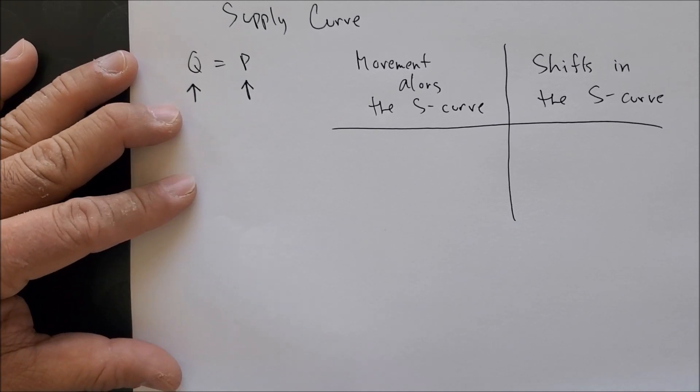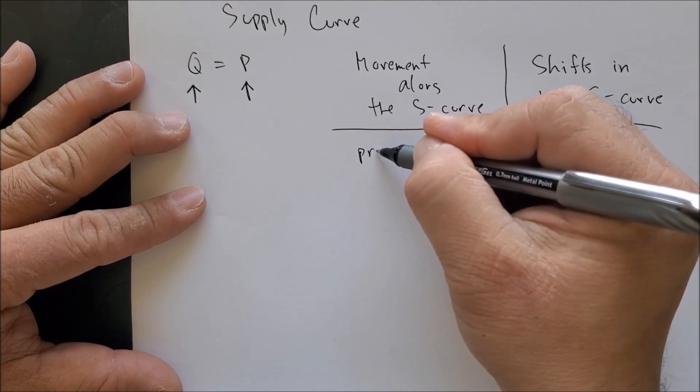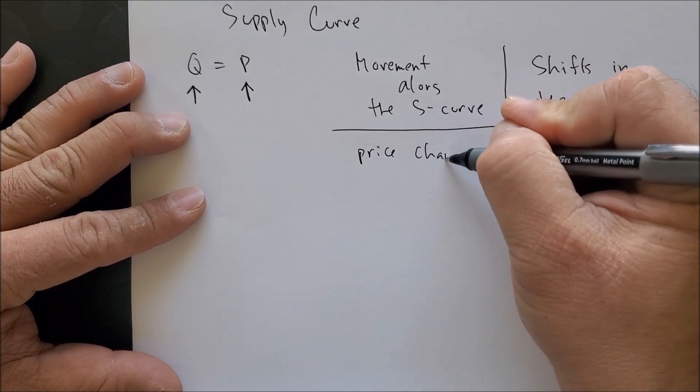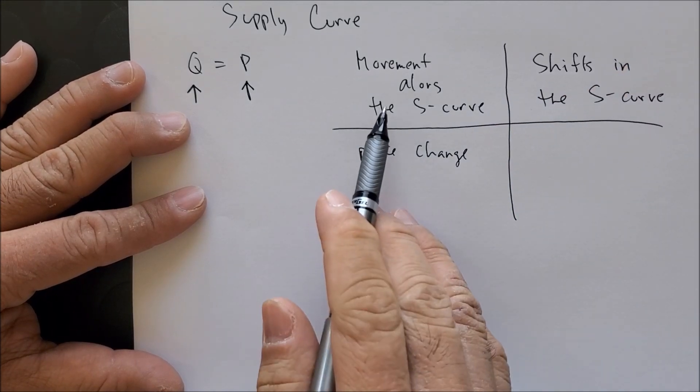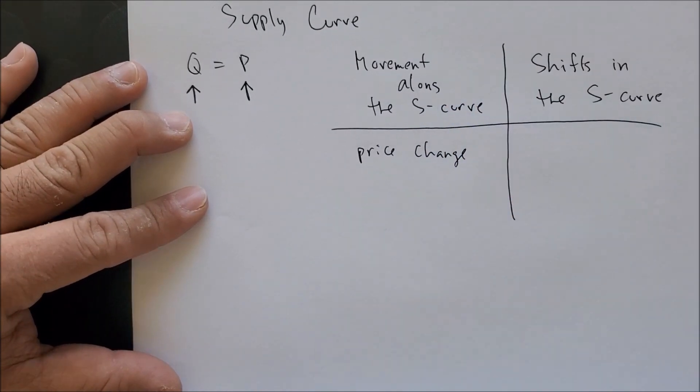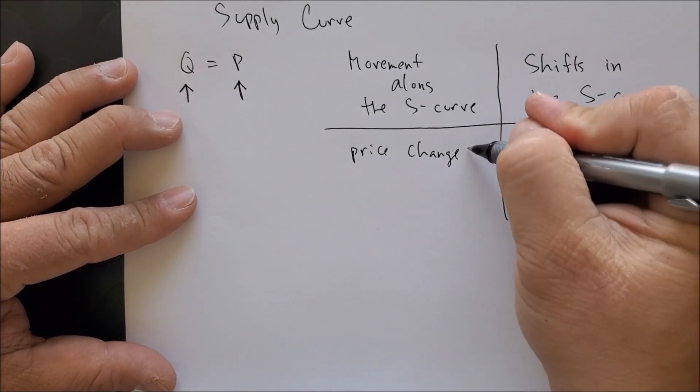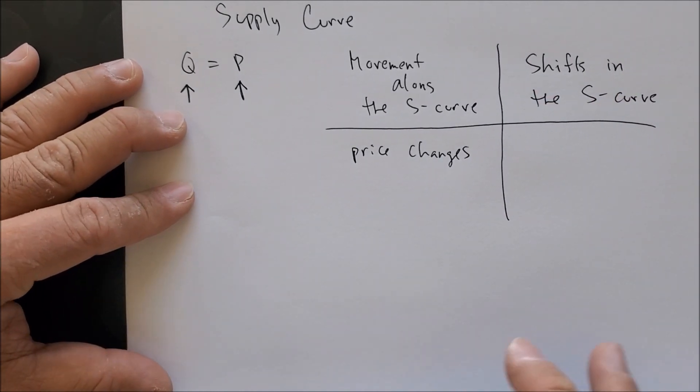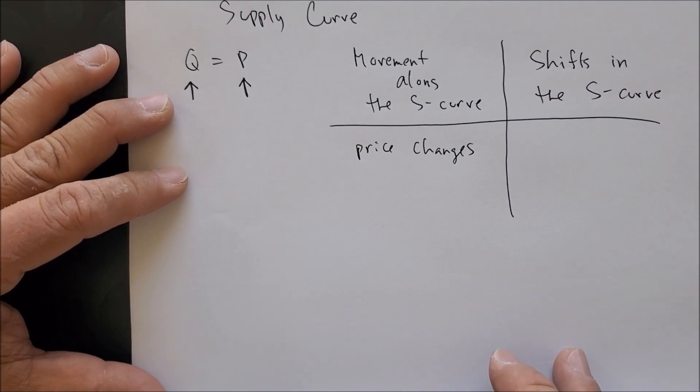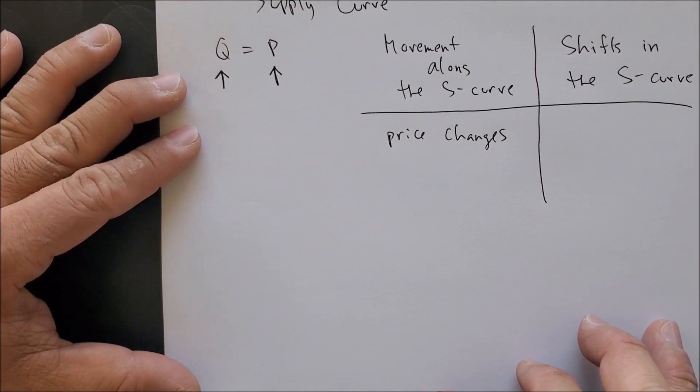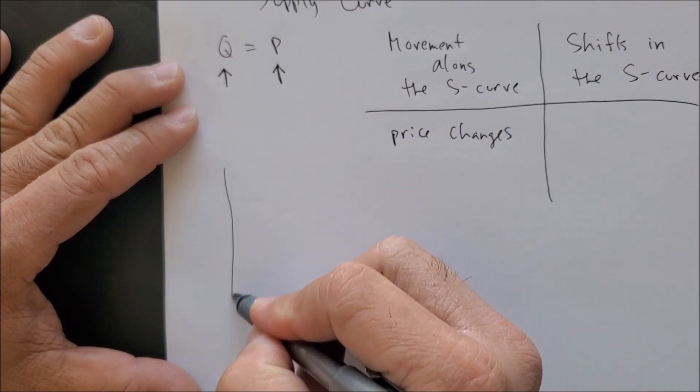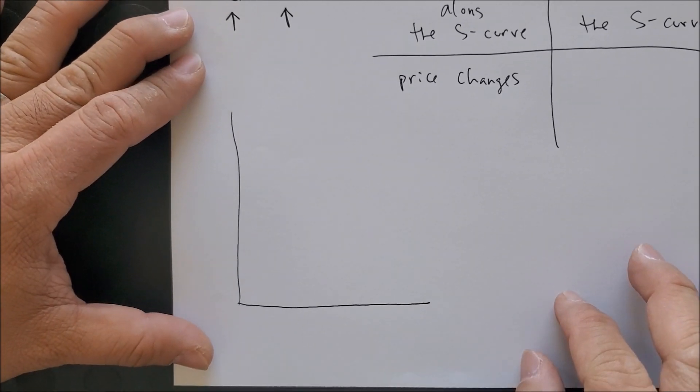The good thing is like the demand curve, only price is going to cause a movement along the supply curve. We are looking at price changing today and we're focusing on the graph in present time.